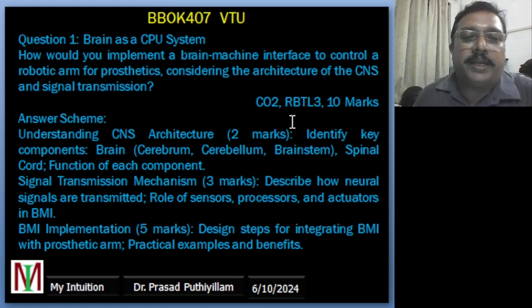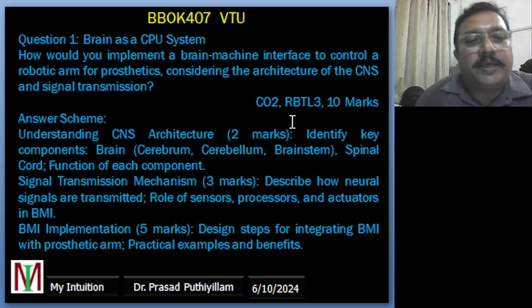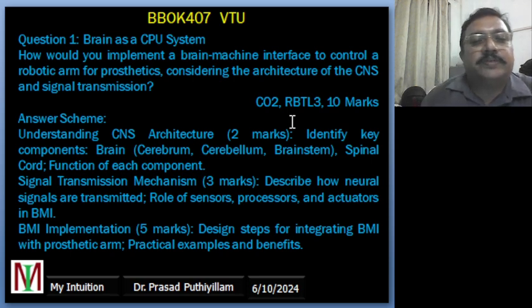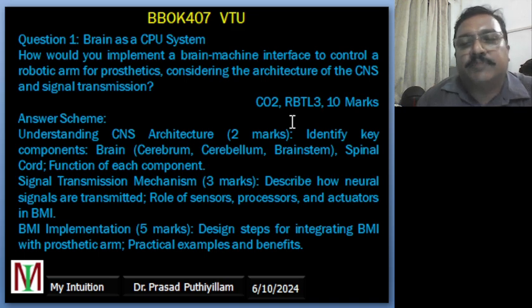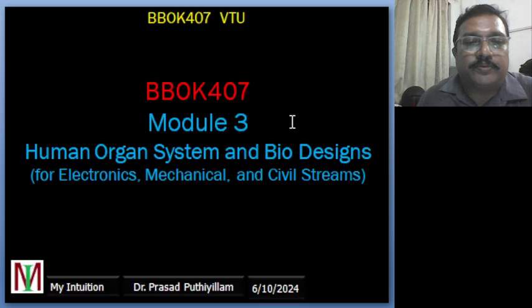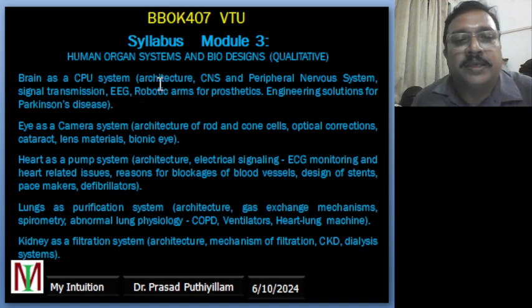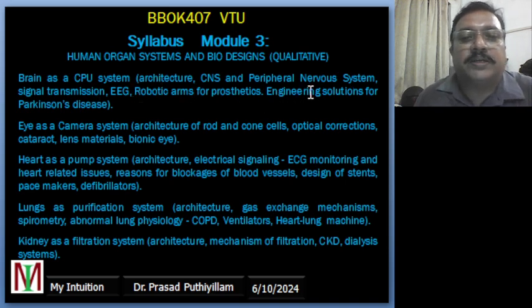Question number one — brain as CPU system: How would you implement a brain-machine interface to control a robotic arm for prosthesis, considering the architecture of CNS and signal transmission? The topics combined are: CNS architecture, peripheral nervous system, signal transmission, robotic arm for prosthetic engineering solution for Parkinson's disease.